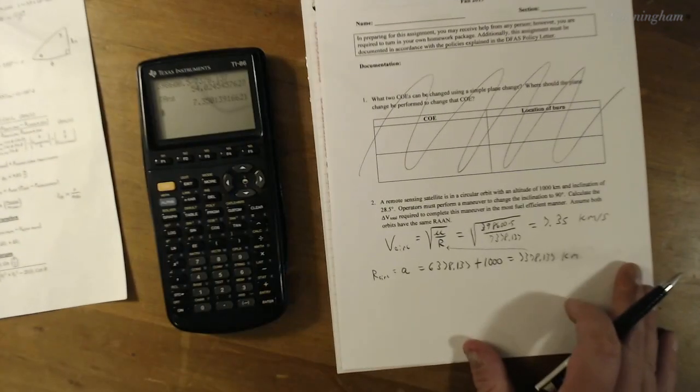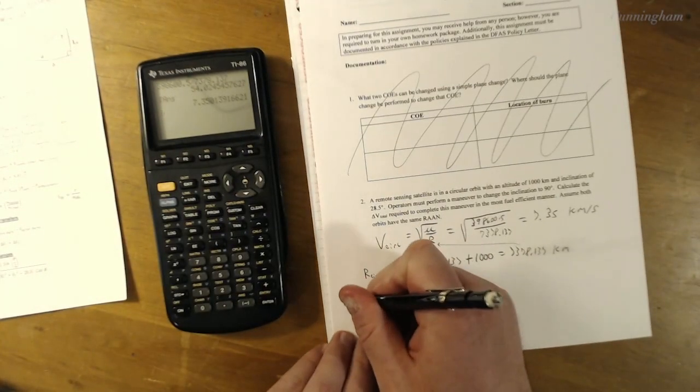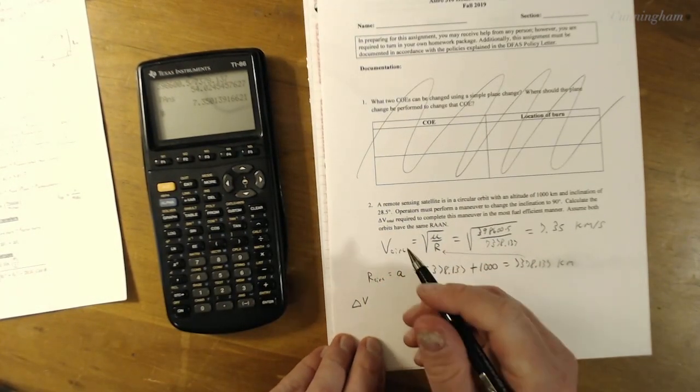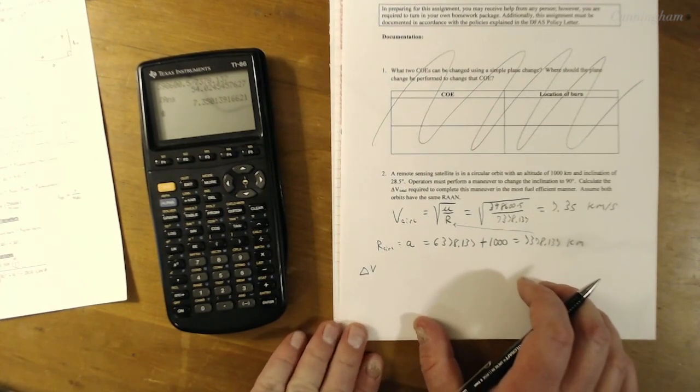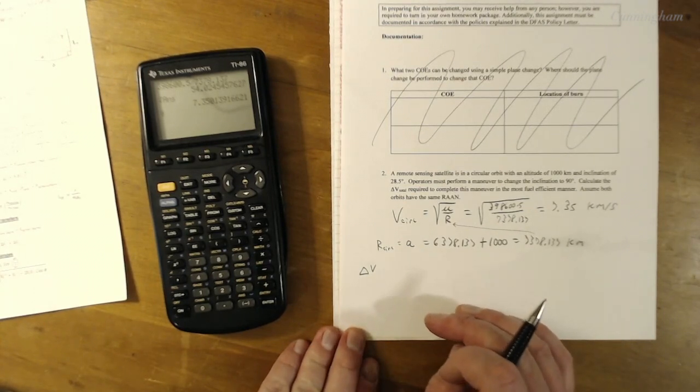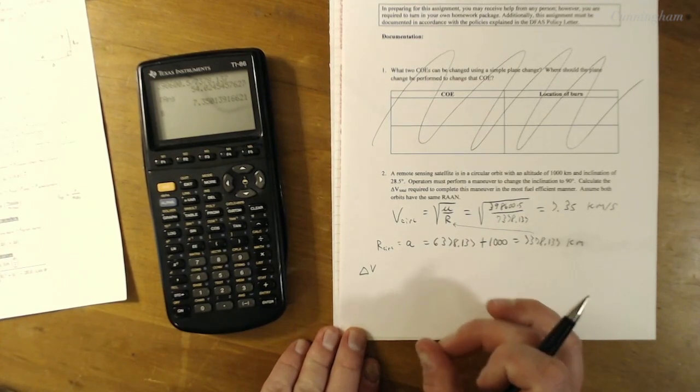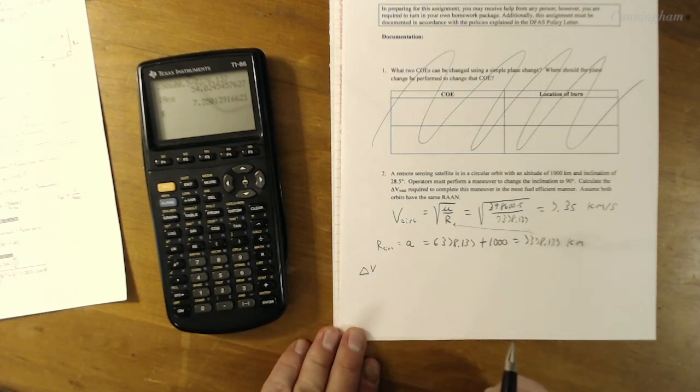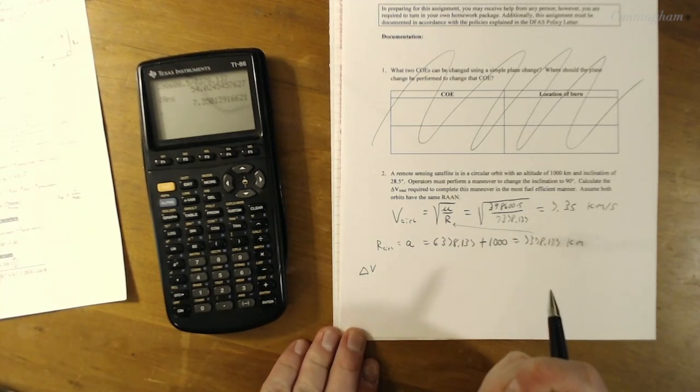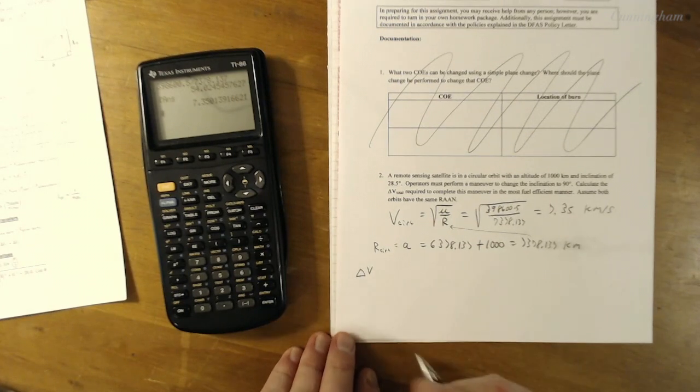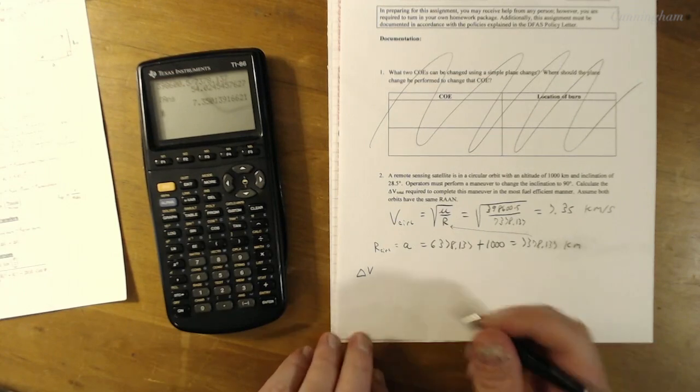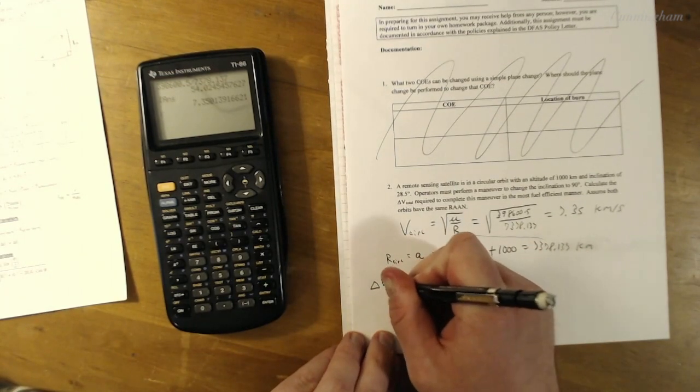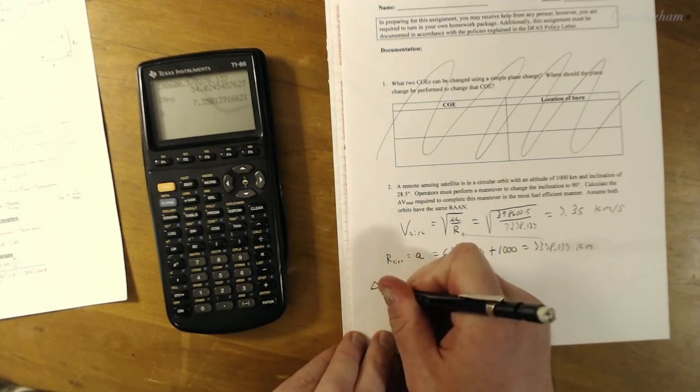Okay, that gives us about 7.35 kilometers per second. Now that we have that velocity, we can pull out our equation sheet. We're going to use this delta V sub S equals 2 VI sine theta over 2. Let's break that down for a second.